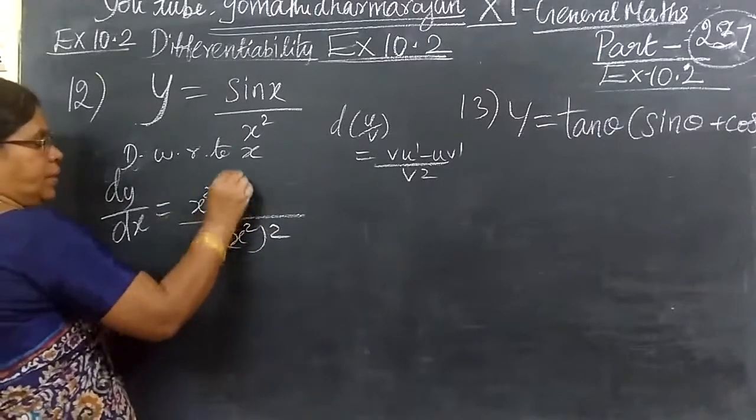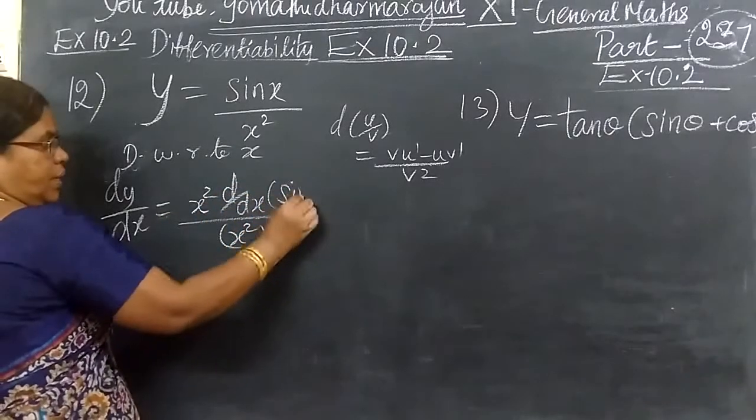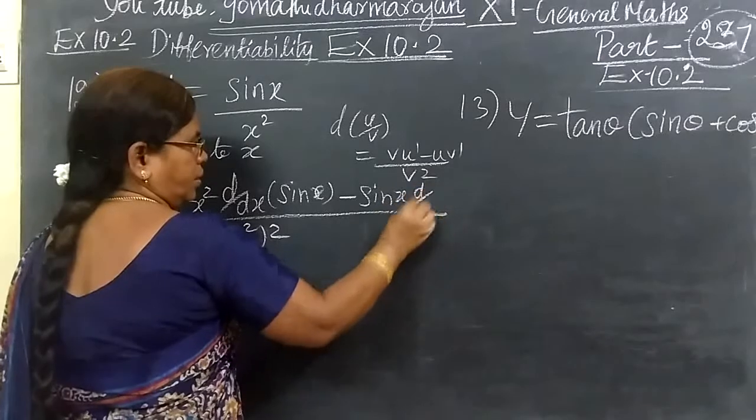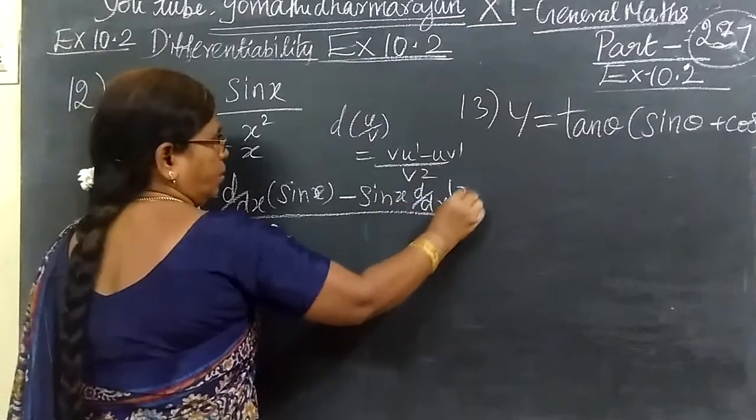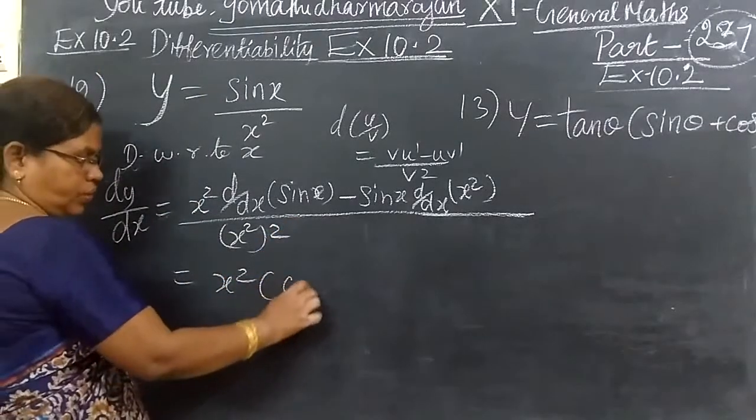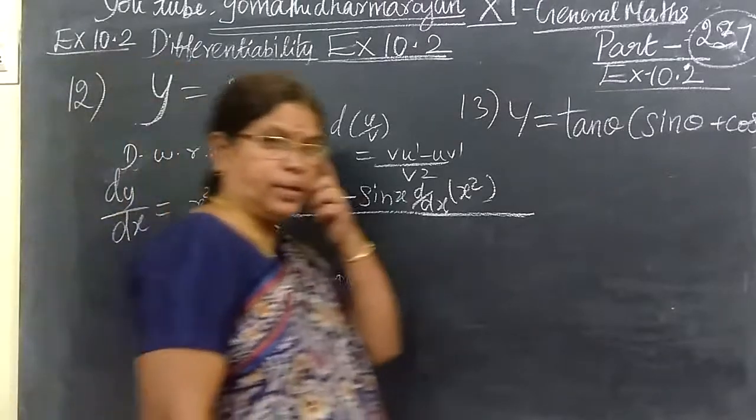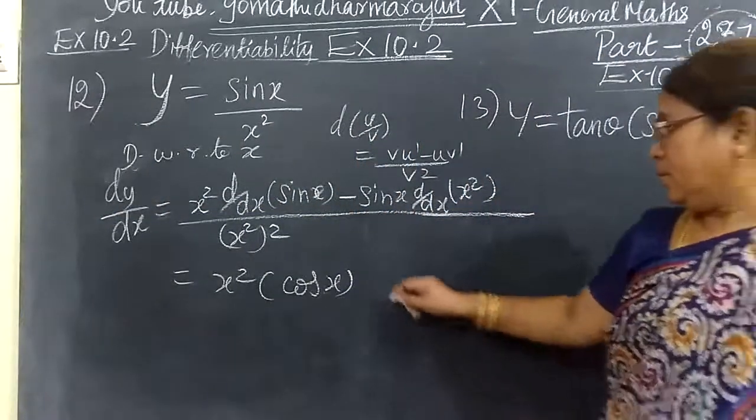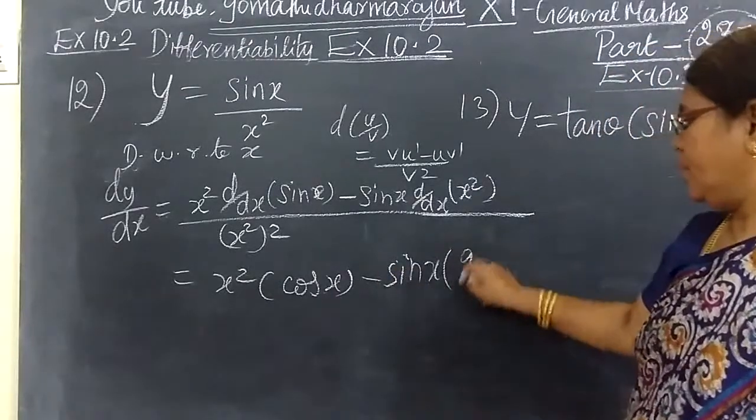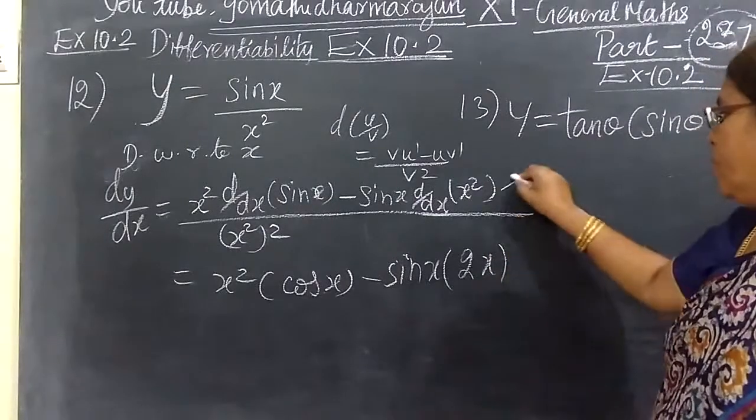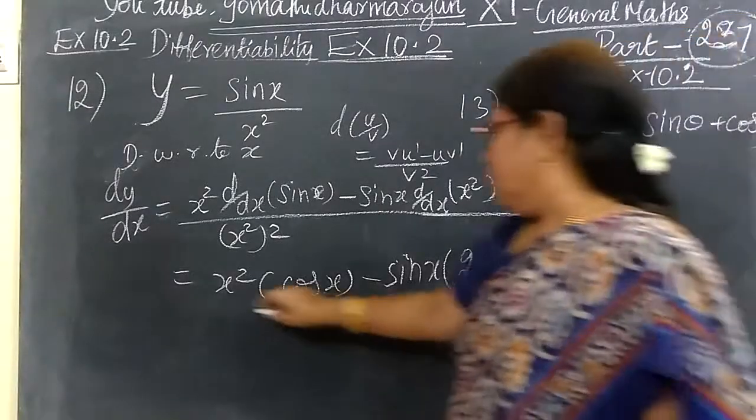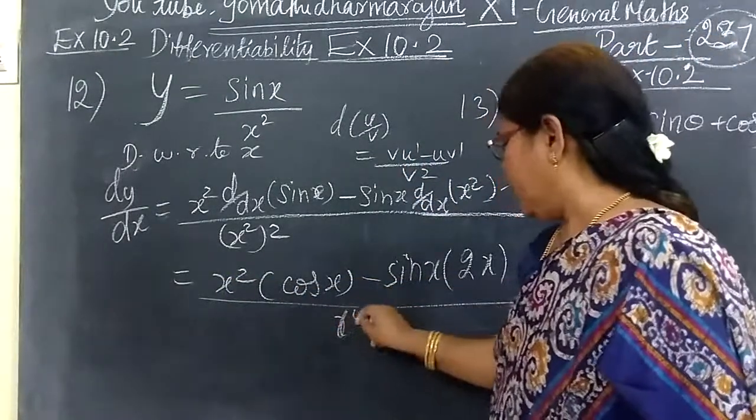Now write here d by dx of sin x, then minus sin x you write as it is, then d by dx of x square. So x square, sin x you write differentiation as cos x. Then you get minus sin x, x square you write as 2x. n means x power n minus 1. Then divide it by x power 4.